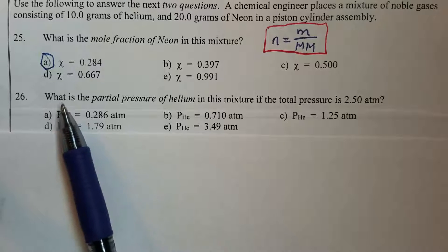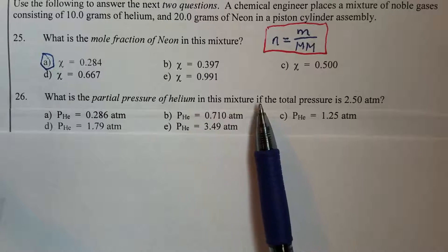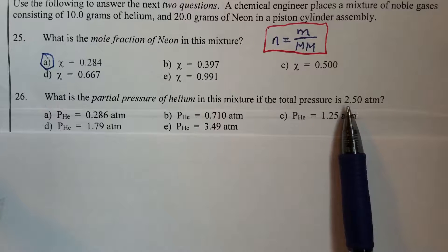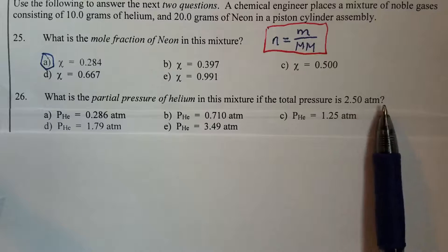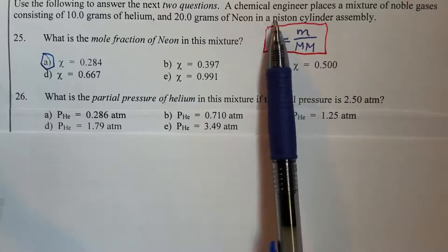The next question: what is the partial pressure of helium in this mixture if the total pressure is 2.5 atmosphere? Of course, we still have to use the information given above right here.